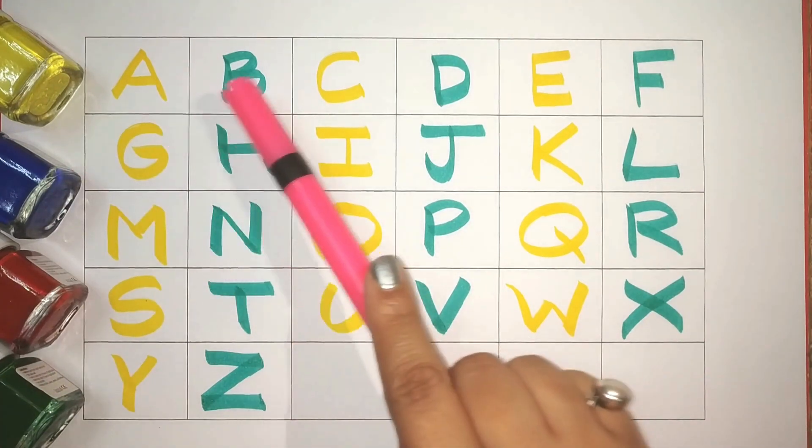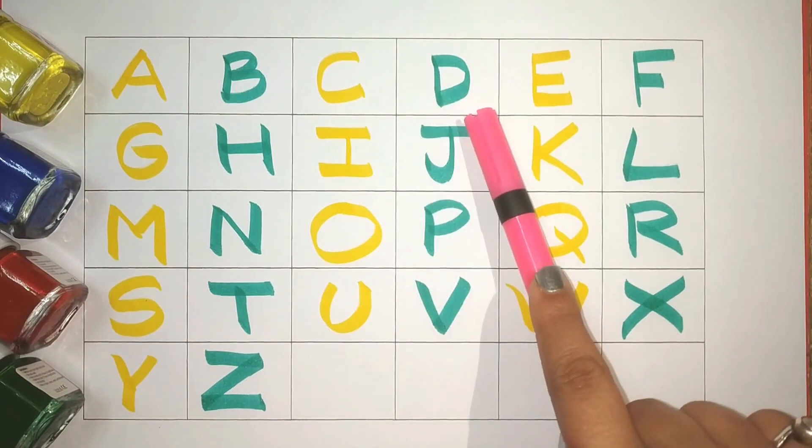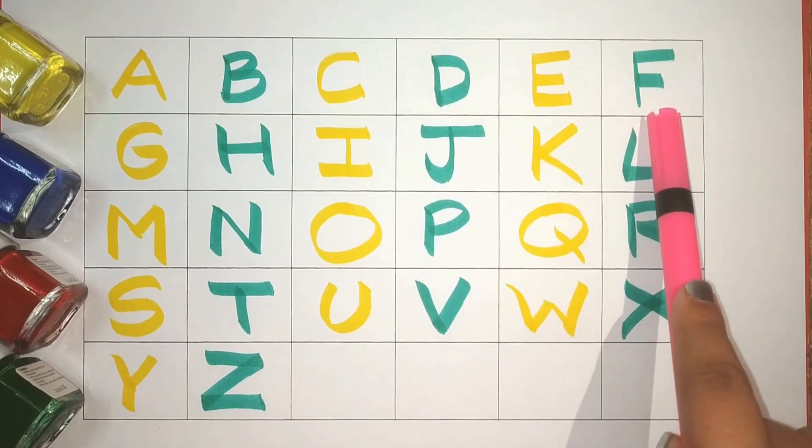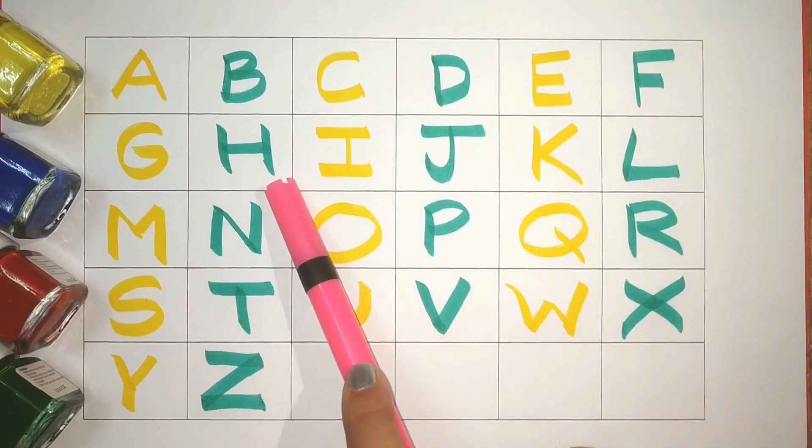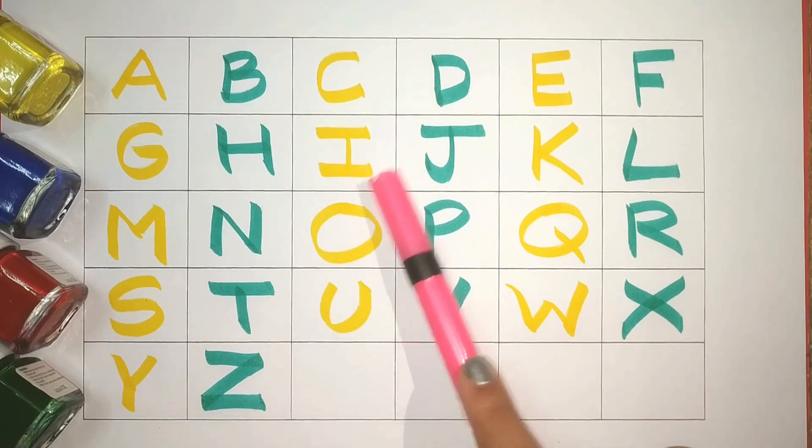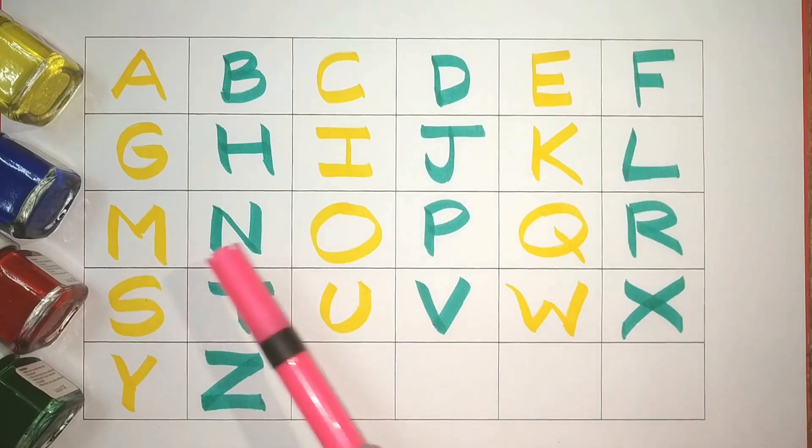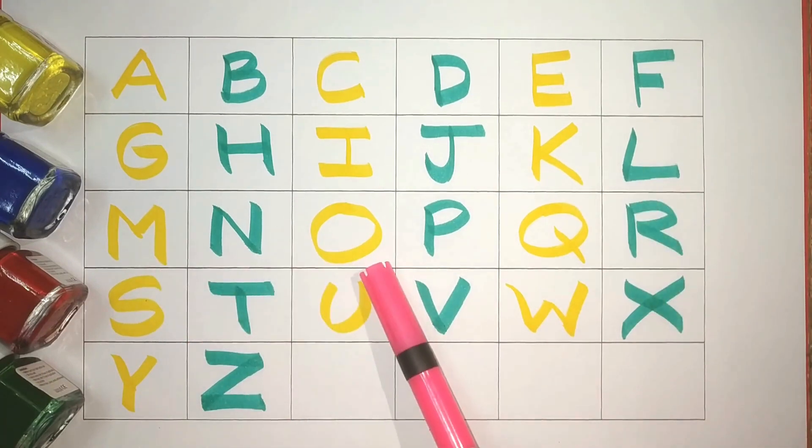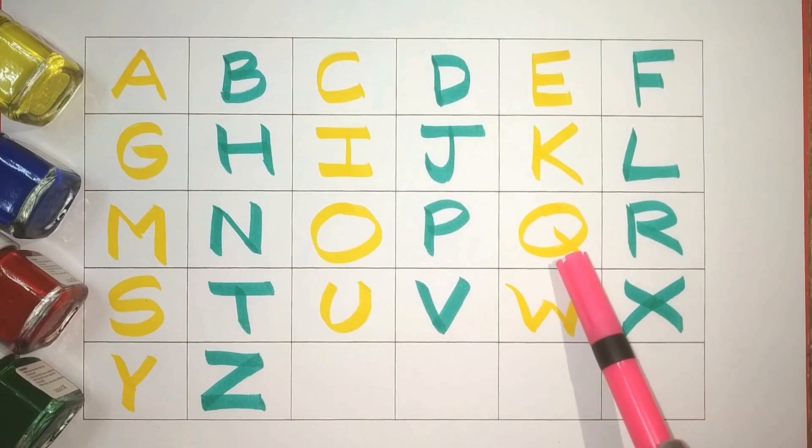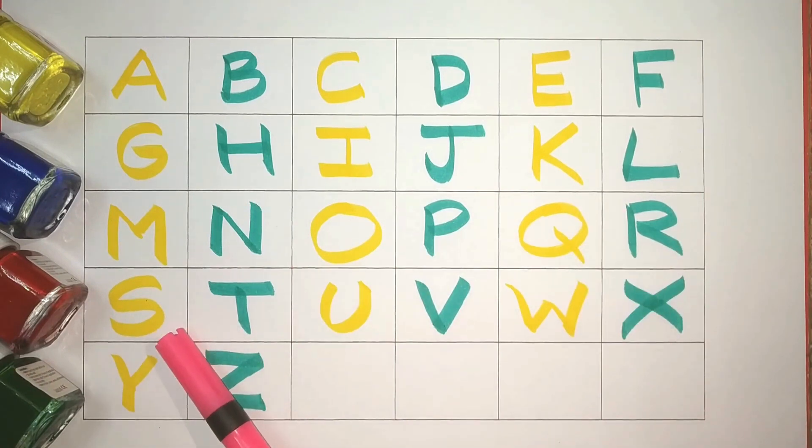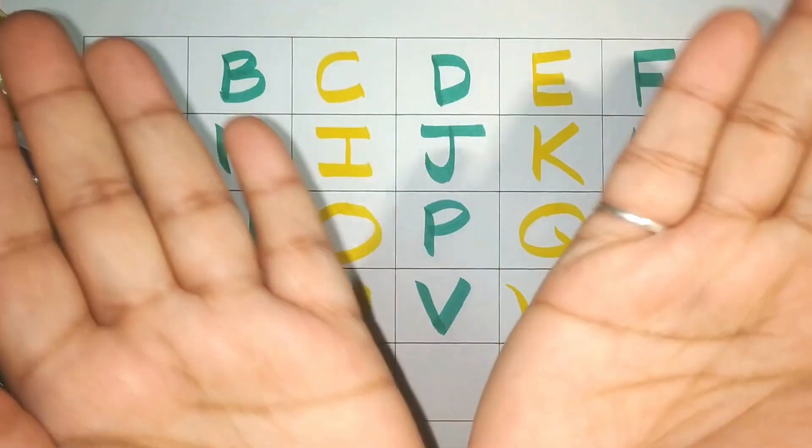A, yellow, B, green, C, yellow, D, green, E, yellow, F, green, G, yellow, H, green, I, yellow, J, green, K, yellow, L, green, M, yellow, N, green, O, yellow, P, green, Q, yellow, R, green, S, yellow, T, green, U, yellow, V, green, W, yellow, X, green, Y, yellow, and Z, green. Simple.